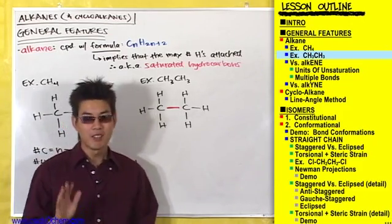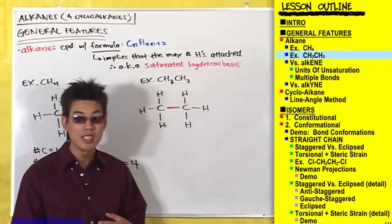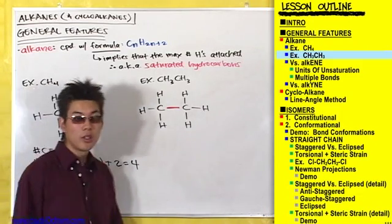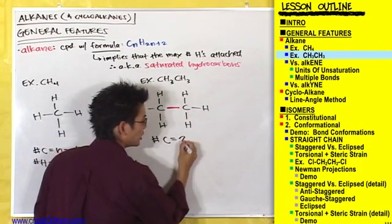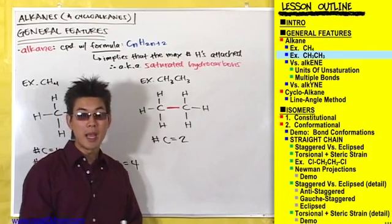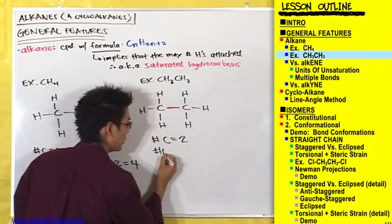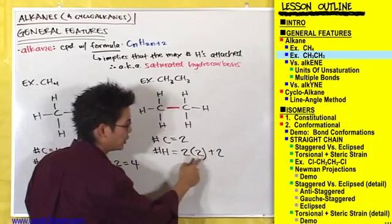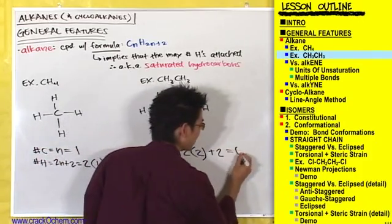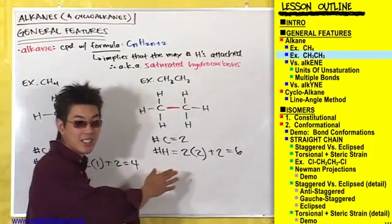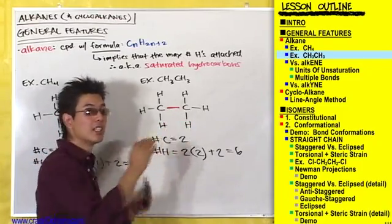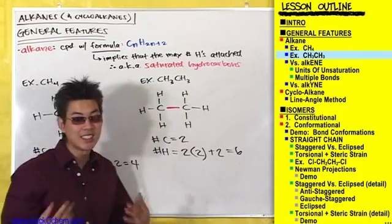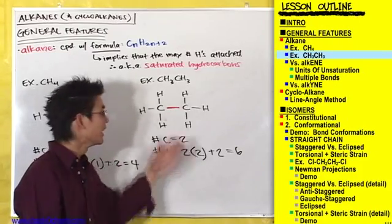If you don't believe this is a saturated hydrocarbon, let's use the general formula of an alkane to double-check. The number of carbons equals two, so the max number of hydrogens is 2n + 2, which is 2(2) + 2 = 6. So if this is an alkane, we should have six hydrogens for this two-carbon compound. And do we? Yes — one, two, three, four, five, six hydrogens. This compound is saturated; it is an alkane.